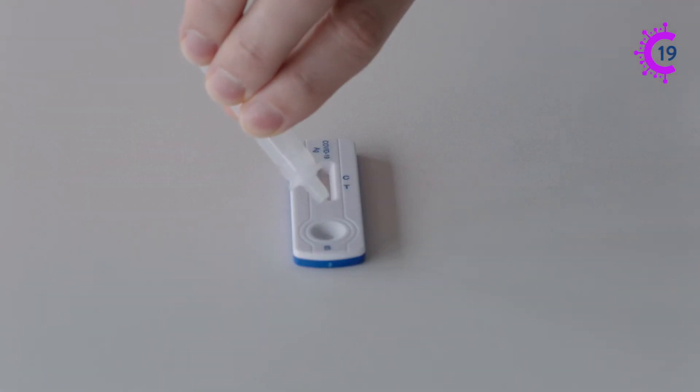Turn the tube upside down and then carefully squeeze four drops of the solution onto the specimen well of the cassette. Start the timer.